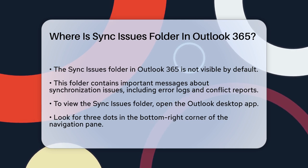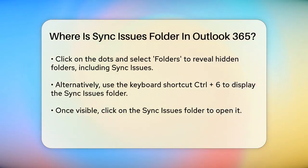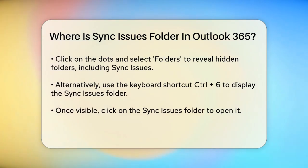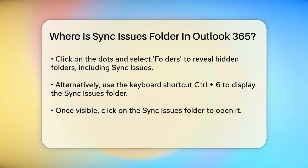To view the Sync Issues folder, you need to make it visible. Here's how you can do it: open your Outlook desktop app and look at the navigation pane on the left. At the bottom right corner of this pane, you'll see three dots. Click on these dots and select the Folders option from the menu that appears. This will change your Outlook view and allow you to see hidden folders, including the Sync Issues folder.